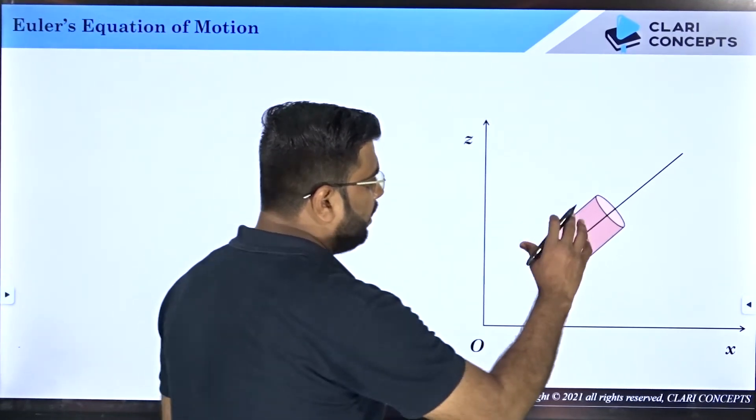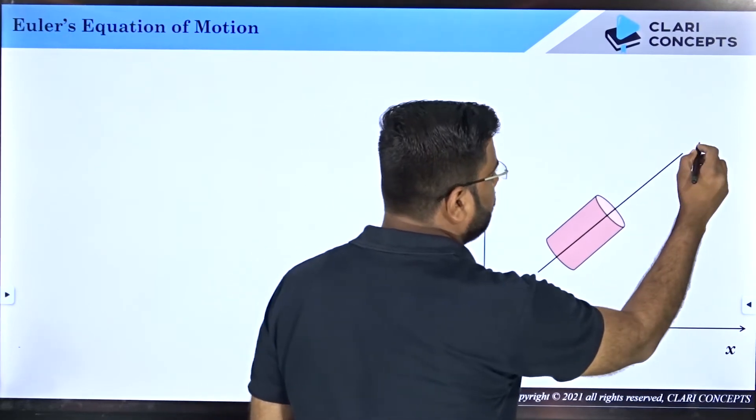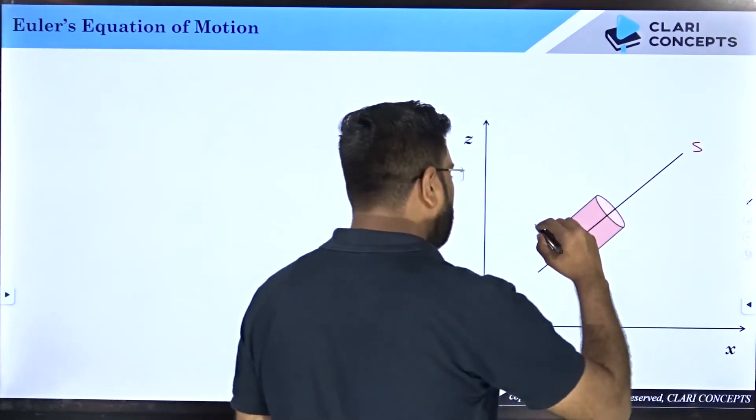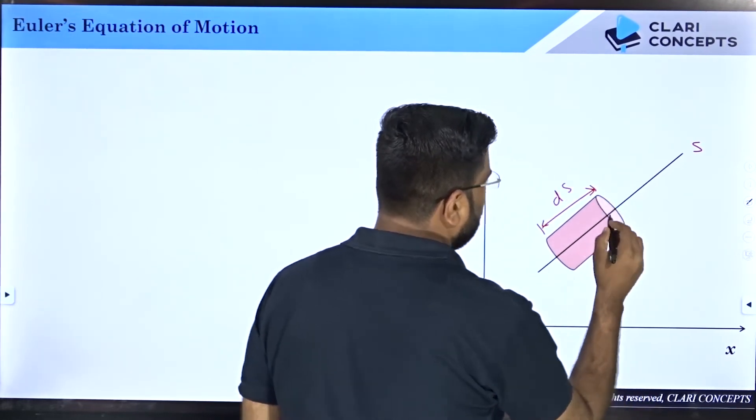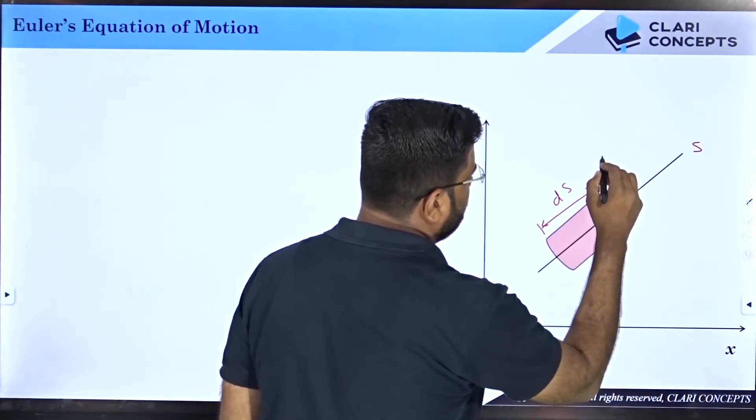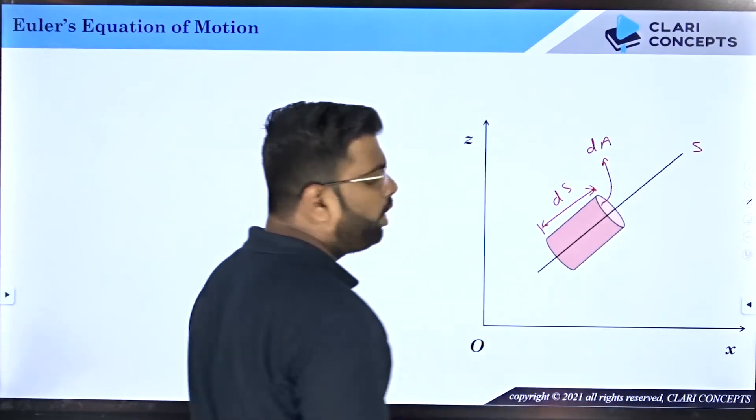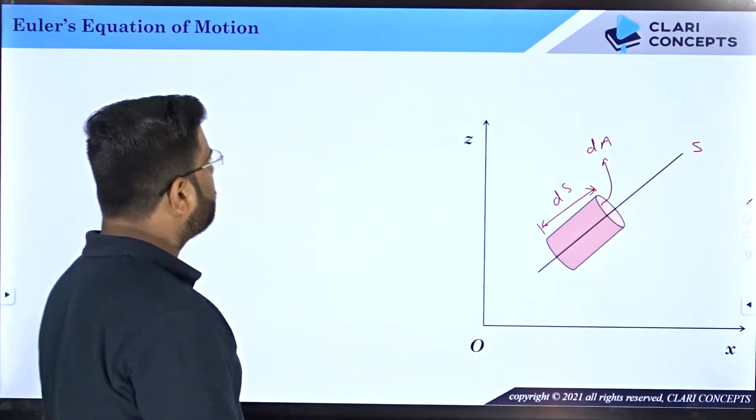Let us say this fluid element is flowing from here to here and this direction is supposed direction s. I would just mention the length of the fluid element, let us say it is ds, and the cross-sectional area is supposed da, a small element.